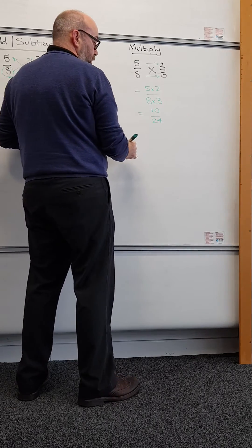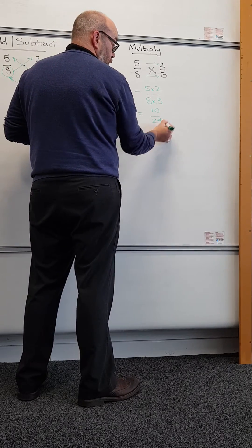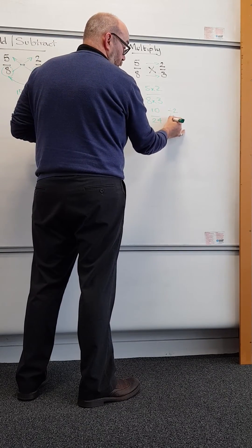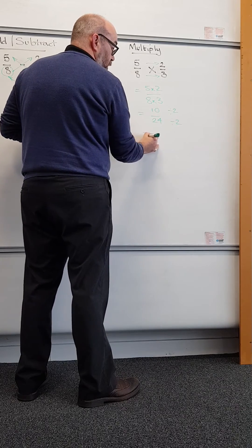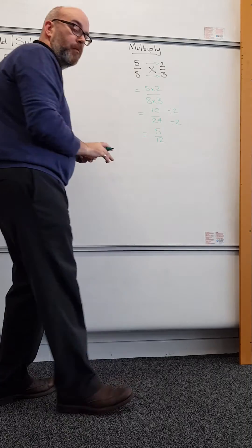And then as I say, cancel. So looking at 10 and 24, these are both in the 2 times table. So divide top and bottom by 2, giving you 5 over 12. Thank you.